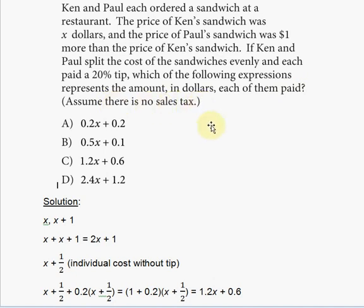Okay, so first we estimate what each sandwich costs, and we'll determine exactly which is going to be X and X plus one. So two sandwiches—this is the total. One of them is X dollars and the other one is X plus one dollars, because it says one more dollar than the price of Ken's sandwich.